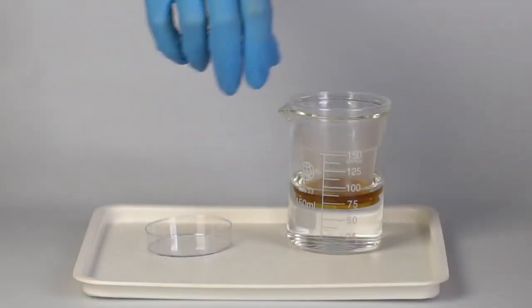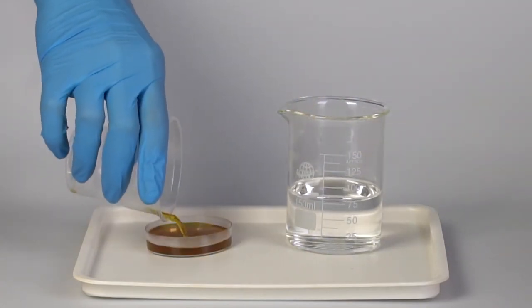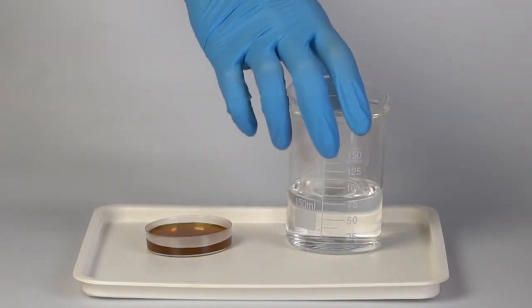When the substance dissolves completely, carefully pour the solution into a Petri dish. Leave the Petri dish with the solution on the tray.